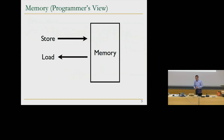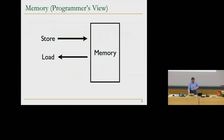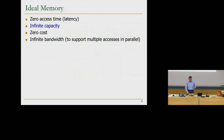This is the programmer's view of memory. You do loads from memory and stores to memory. So far we've assumed that memory is physical — you have the address in memory, the programmer knows that address and accesses it. But if you remember the ideal memory, we want zero access time, infinite capacity, zero cost, and infinite bandwidth. So now we're going to deal with capacity issues: what if you don't have enough memory?